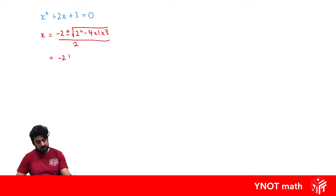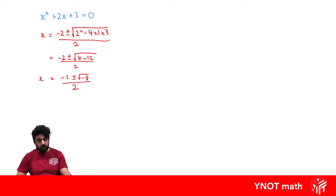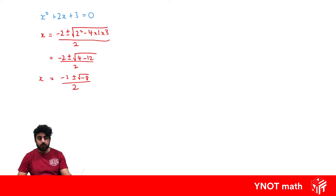Simplifying this, we get minus 2 plus or minus the square root of 4 minus 12 over 2, which gives x equals minus 2 plus or minus the square root of minus 8, all over 2. We've got a bit of a problem here because we have the square root of a negative number, which up until now we have not been able to solve, and we say that x has no solutions.